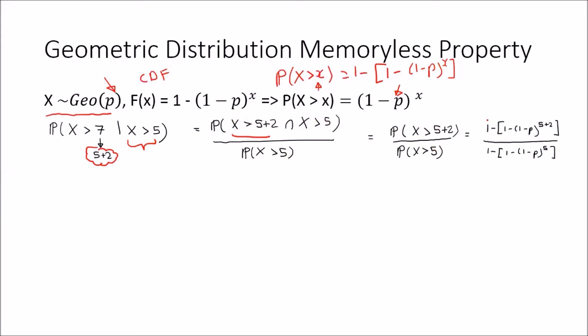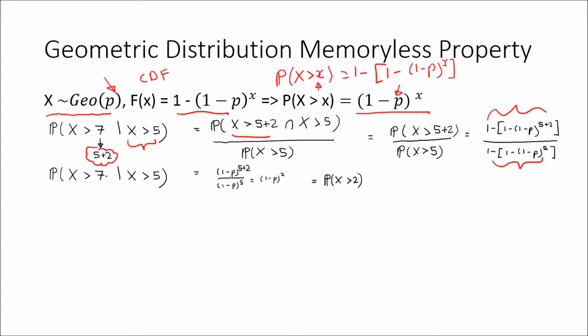Here I've written the CDFs so you can see where it comes from, but we can also directly apply the result. The probability that X is greater than seven — five plus two — conditioning on having already waited more than five flips, is (1 minus p) to the power of five plus two, over (1 minus p) to the power of five, which simplifies to (1 minus p) squared.